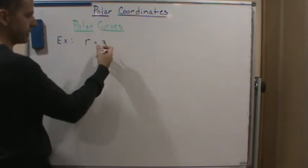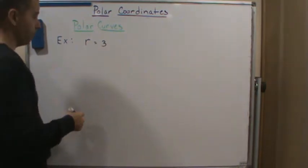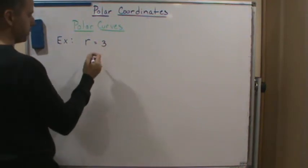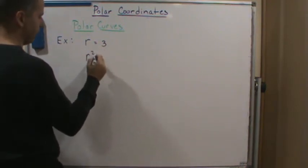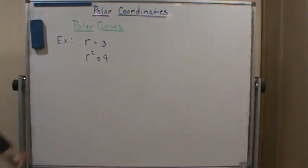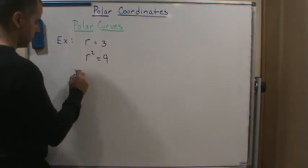We don't have any sine or cosine function here, but we can still square both sides. So we're going to square both sides. That means r squared equals 9. So now what is r squared?